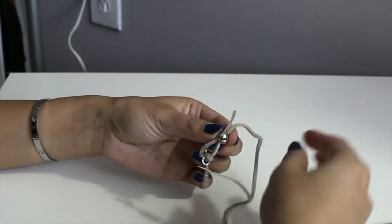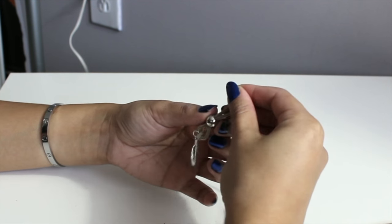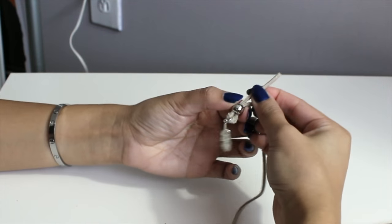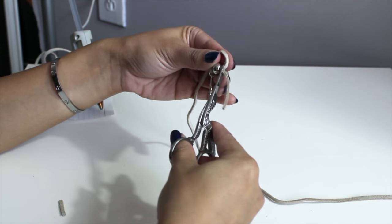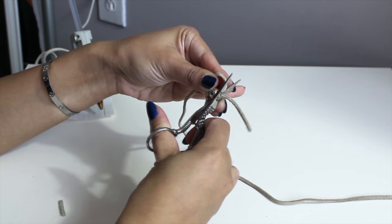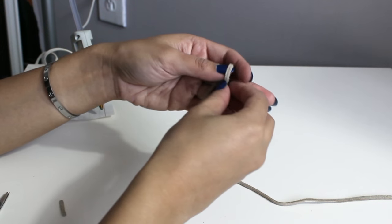Once the glue is nice and dry, you can just snip off the excess suede cord as close to the bead as possible to make it nice and neat. Obviously, you're just going to repeat this process on the other side of the necklace.